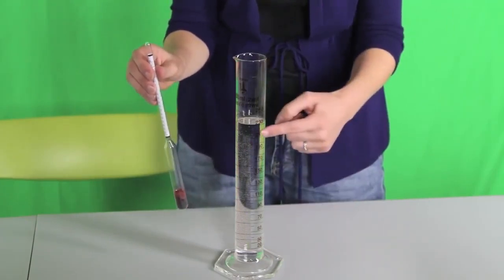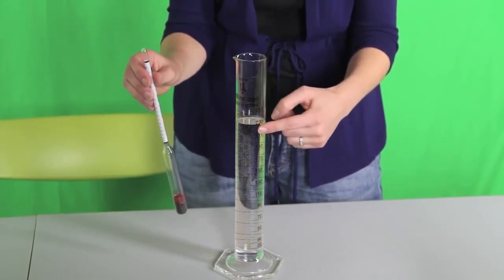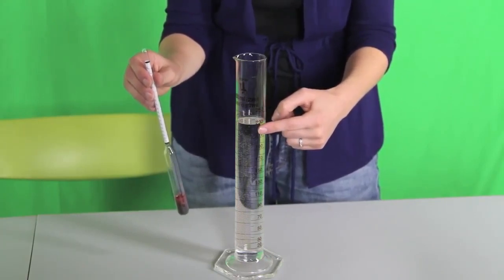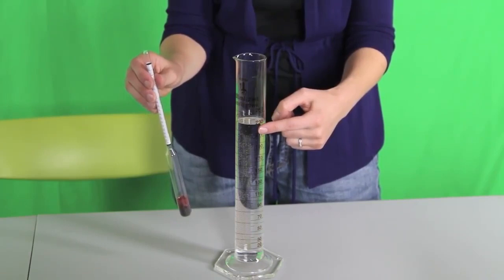First, fill the test tube with a sample of liquid, and in this case I'm using water. Don't put so much liquid into the test cylinder that it overflows when you put the hydrometer in.